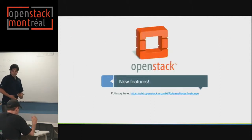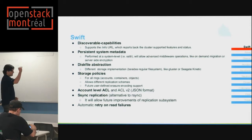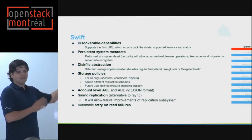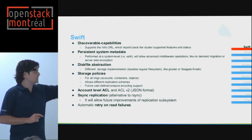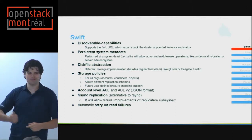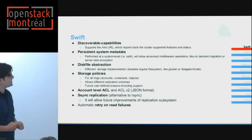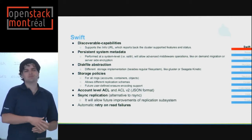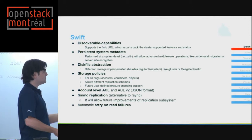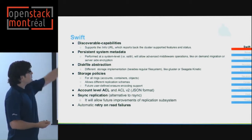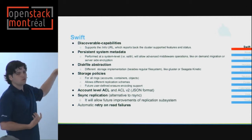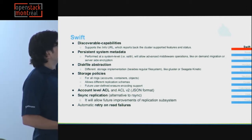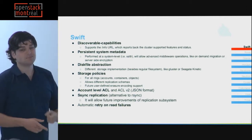The new features are my main point, and I'm going to go over every major project. Swift is an object storage solution. New changes include a new URL that reports what capabilities are installed in the cluster, new system metadata, and the ability to start Swift with different filesystem implementations — meaning you can have a Swift cluster on any kind of storage solution.